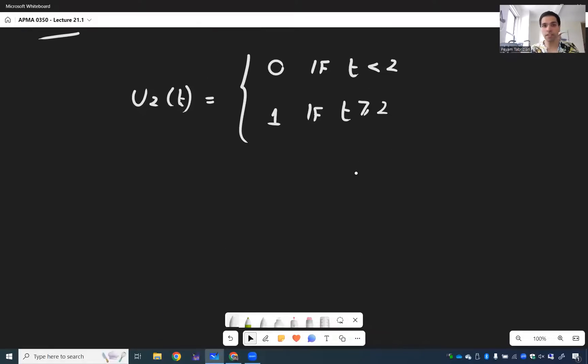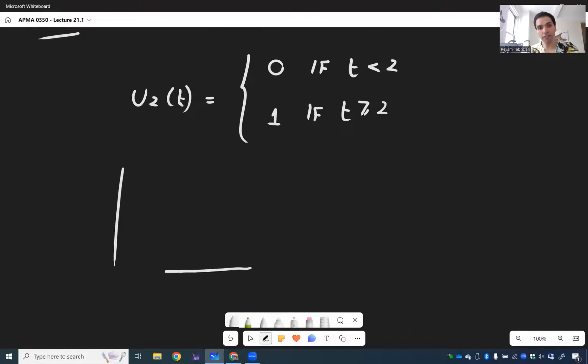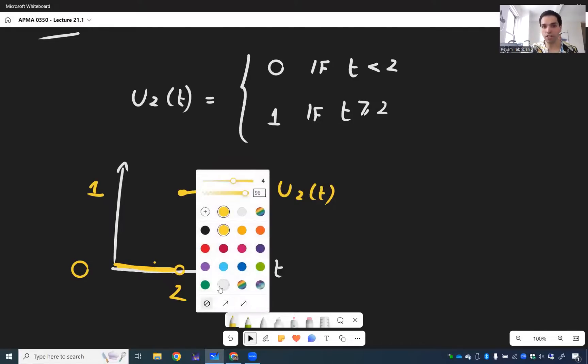So what this looks like is the following. It's literally a function that starts at zero, and then at two, it suddenly jumps up to become one. So that is U2 of T. And again, this is called the Heaviside function at two.